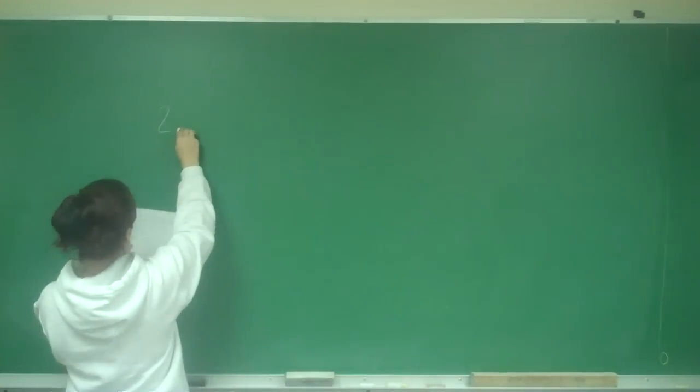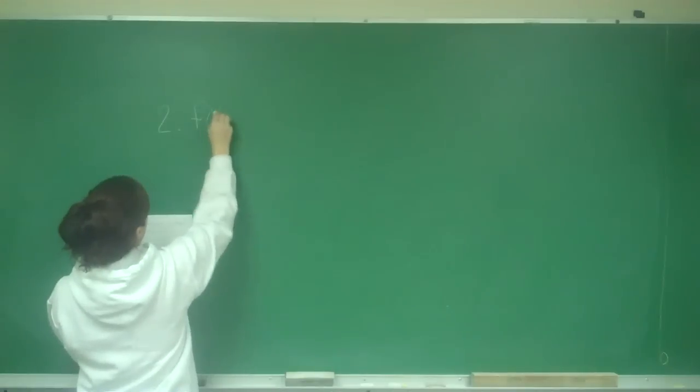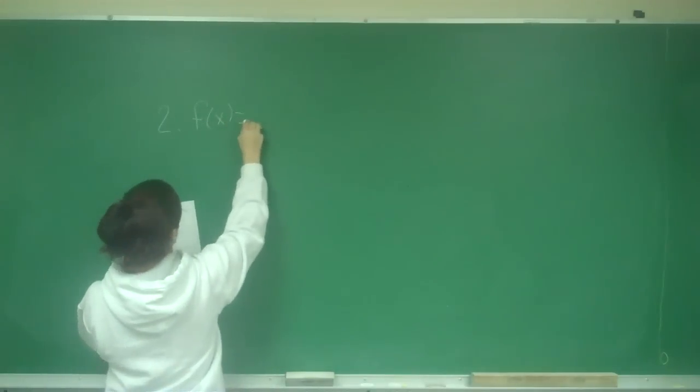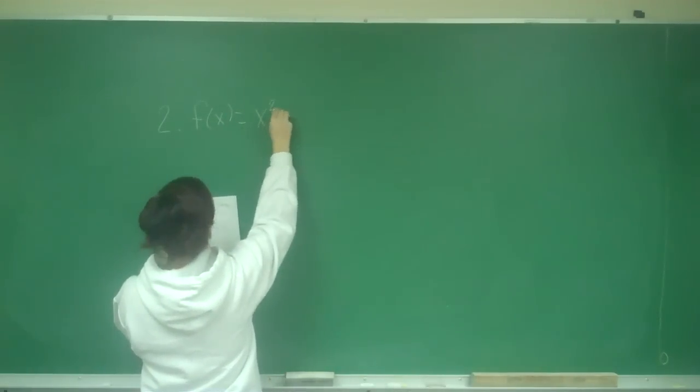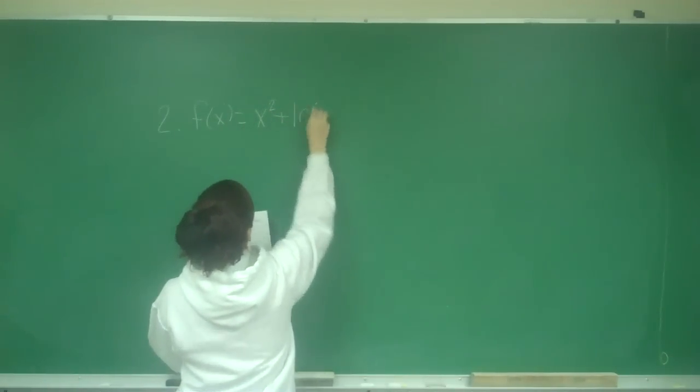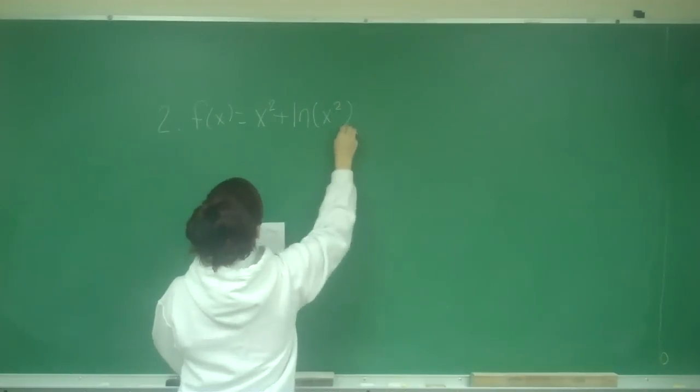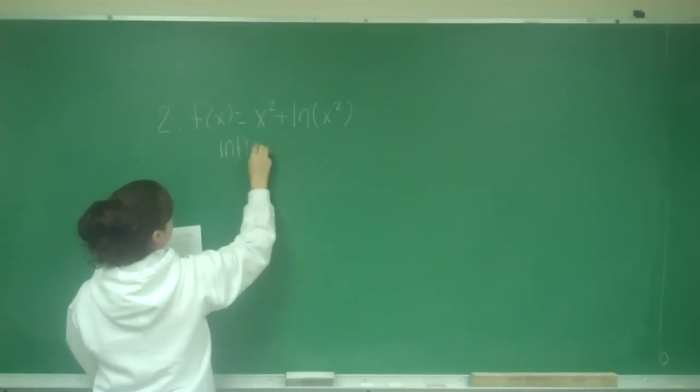Number two says to find each value of x of which f(x) equals x squared plus natural log of x squared has an inflection point. We are given the function f(x) = x² + ln(x²) and are asked to find the inflection point.